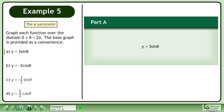In this example we will explore the a parameter. Graph each function over the domain 0 is less than or equal to theta which is less than 2π. The base graph is provided as a convenience.